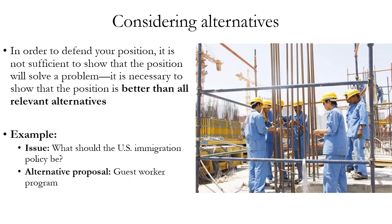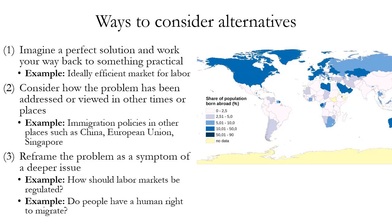For example, if the issue is what should the U.S. immigration policy be, you want to be able to consider alternative proposals. If your initial position is that the U.S. should increase its permitted immigration to allow people to settle here permanently and make a contribution to the economy, you want to be able to show that that's a better proposal than allowing guest workers. A guest worker program would be where you allow workers to settle temporarily but they aren't given permanent legal status in the country.